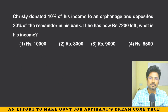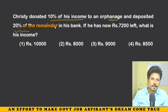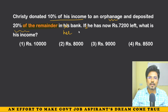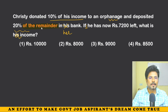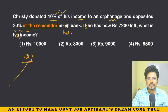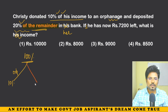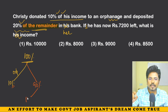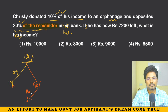Next: Kristi donated 10% of her income to an orphanage and deposited 20% of the remainder in her bank. If she has 7200 left, what is her income? Starting with 100%: after giving 10% to orphanage, 90% remains. 20% of 90% goes to bank — that is 18%.